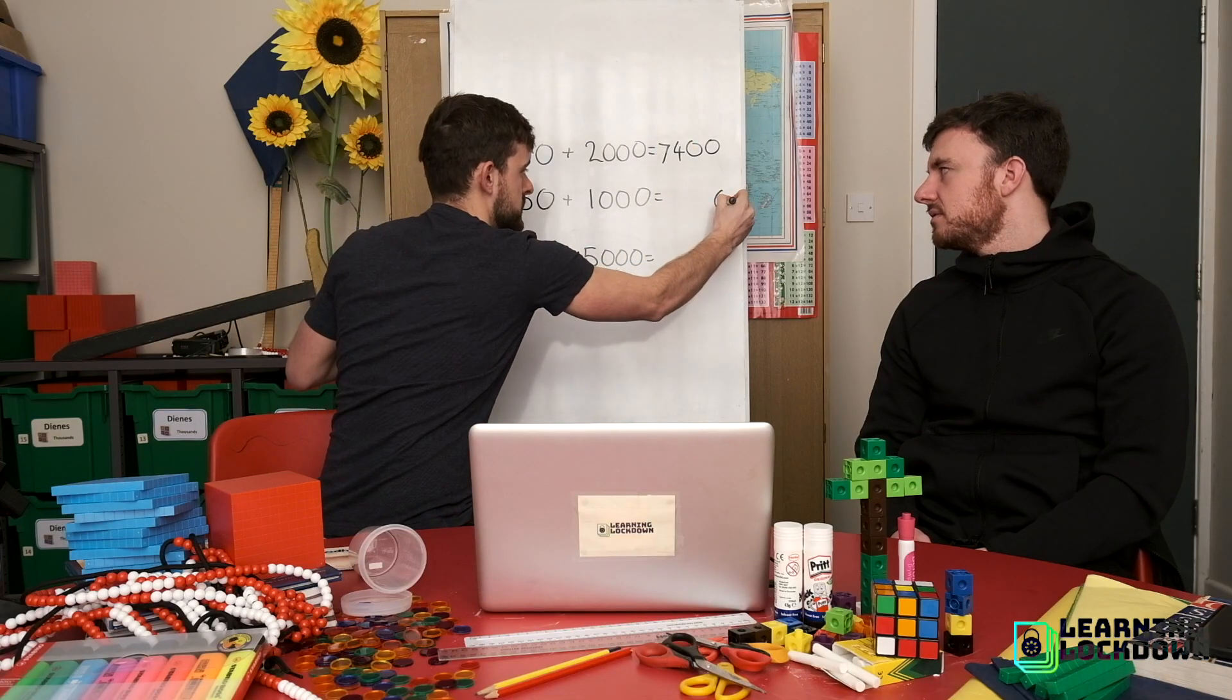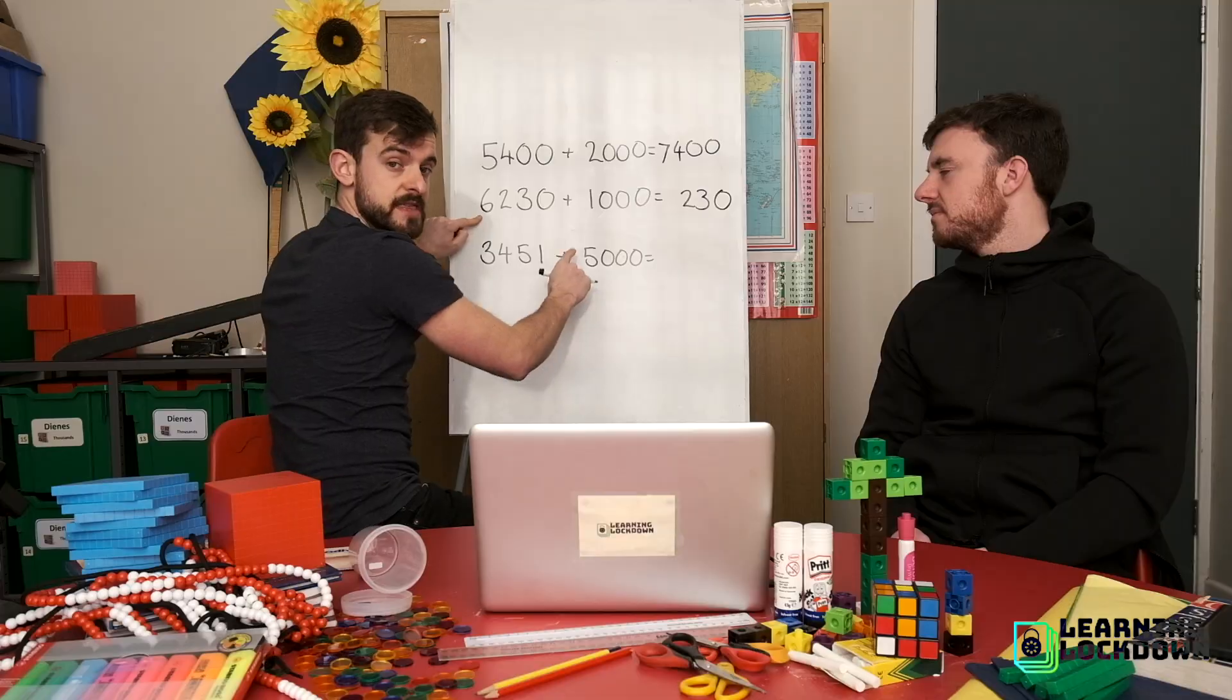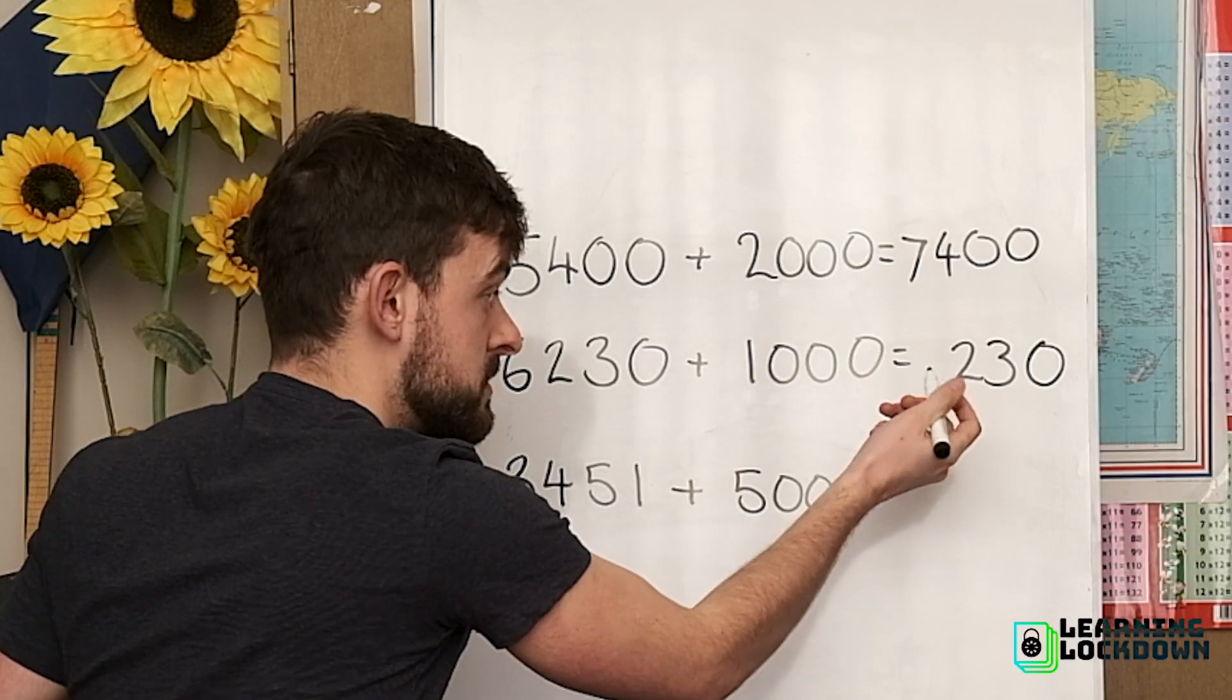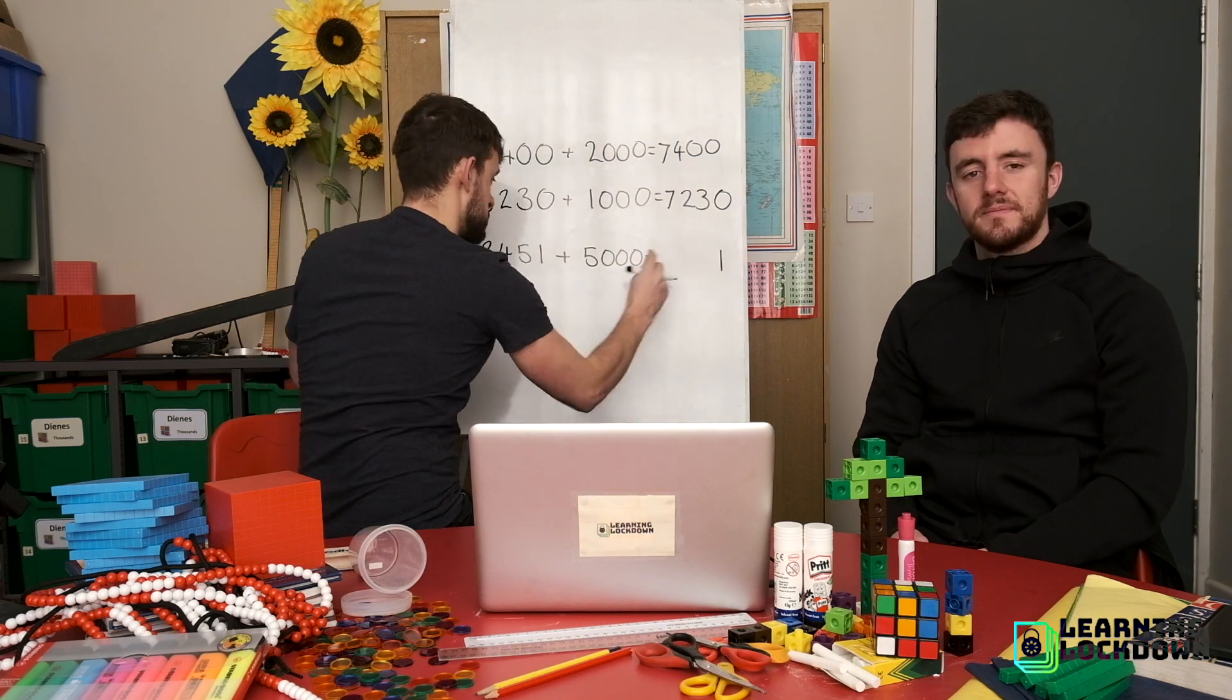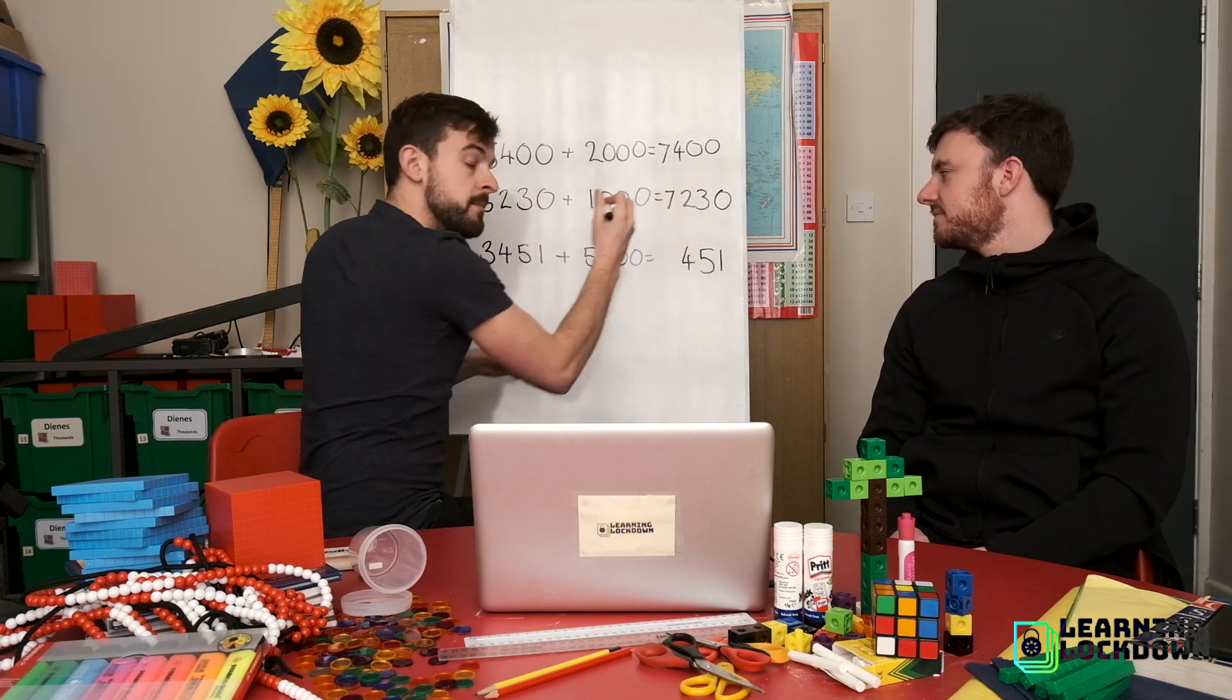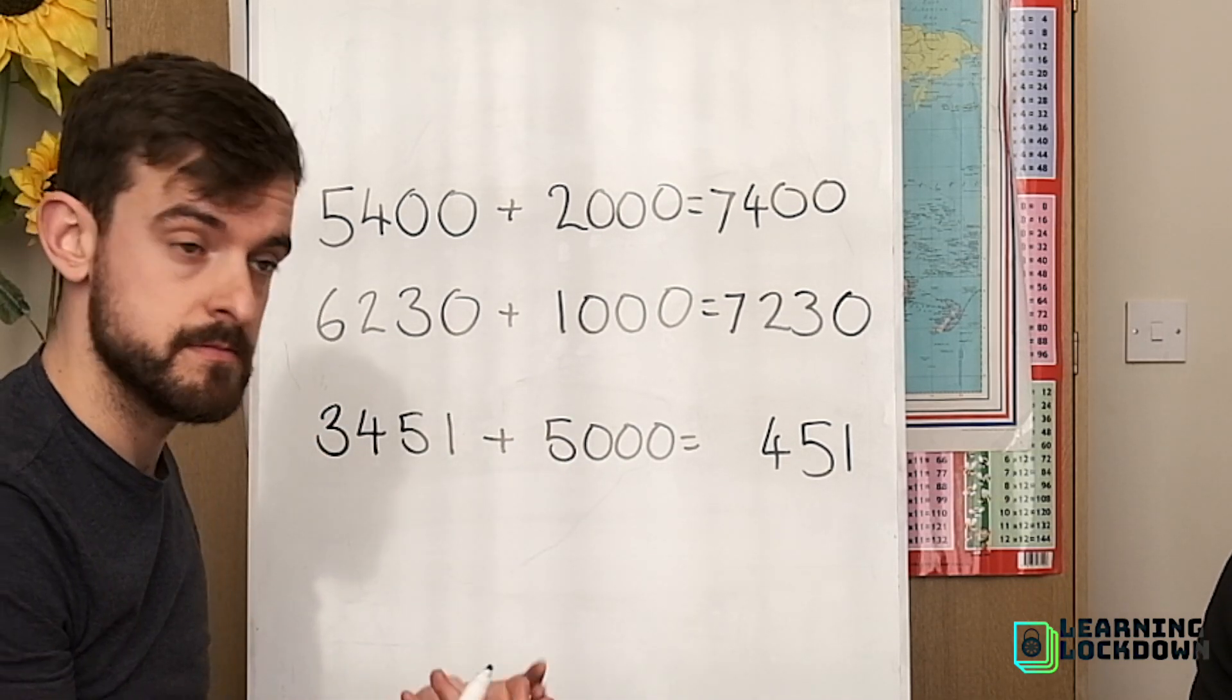It goes the same. Ones won't change. Tens won't change. The hundreds won't change. The thousands: six lots of a thousand add one lots of a thousand, seven lots of a thousand. Eight thousand.